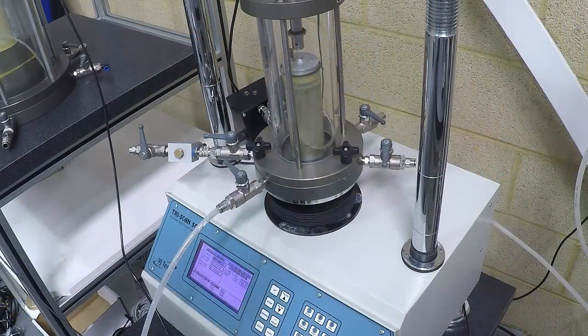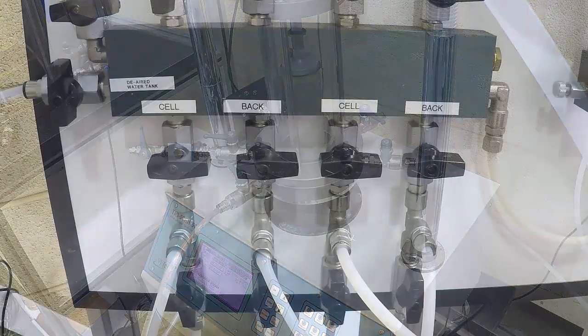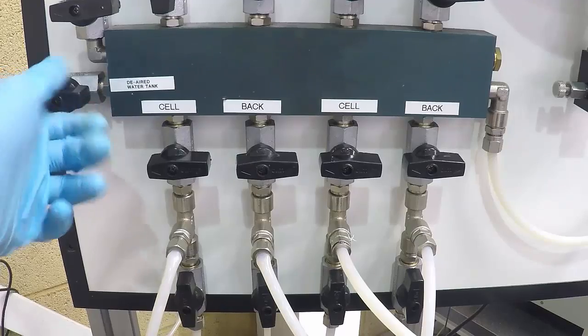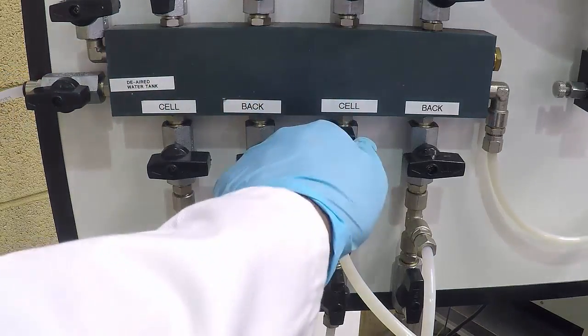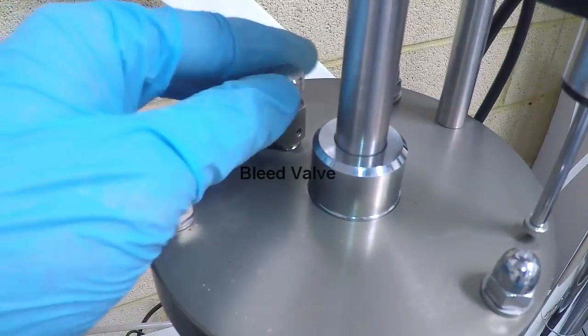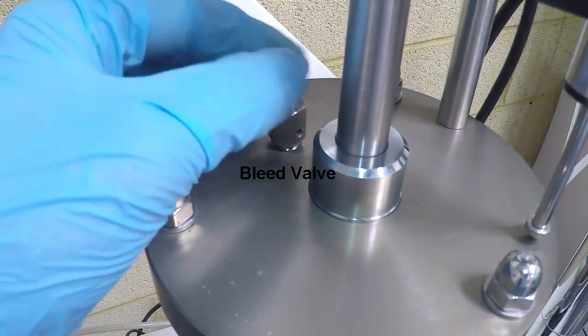Position the cell in the triaxial frame. Open a path from the de-aired water tank into the triaxial cell. Ensure the bleed valve is open and fill the cell with de-aired water.